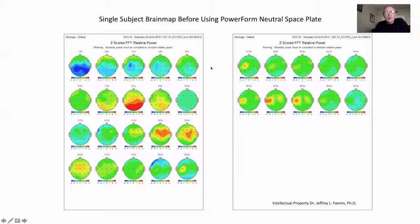So we're looking at this particular brain map of one individual before using the PowerForm neutral space plate. When we see green or any place there's green on the report, it indicates that's normal EEG activity. If it's yellow or orange or red, it's two to three standard deviations above normal, and light blue is two standard deviations below normal and dark blue is three.